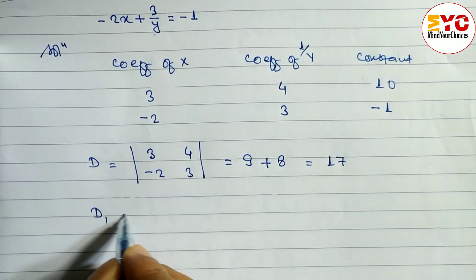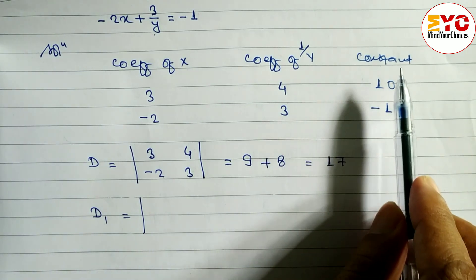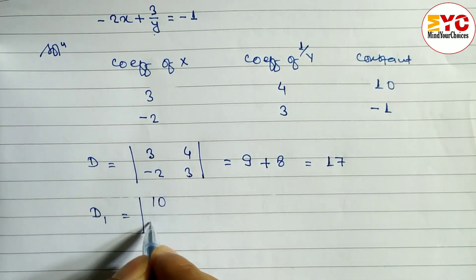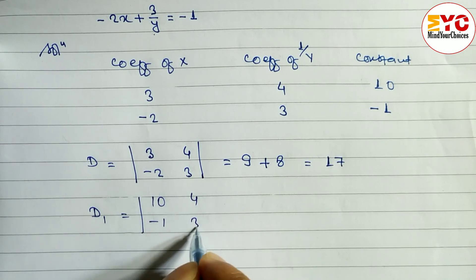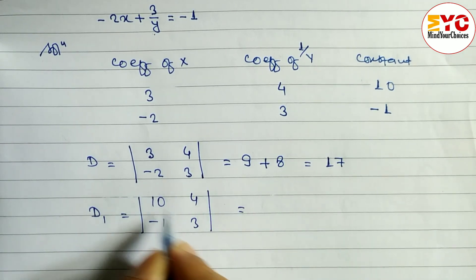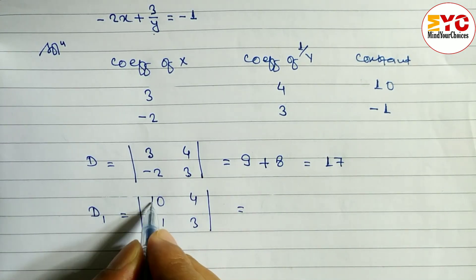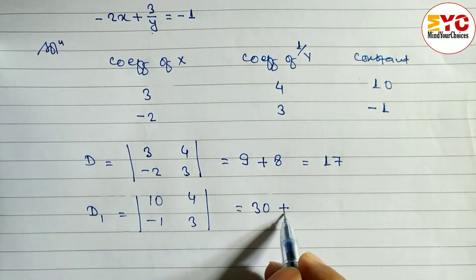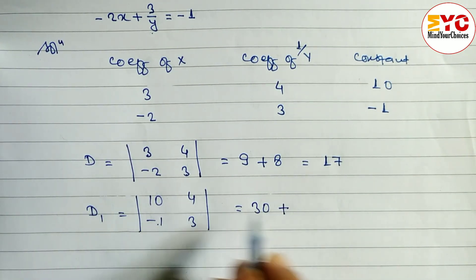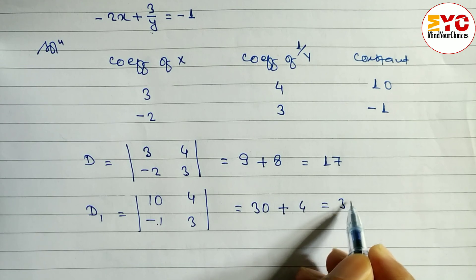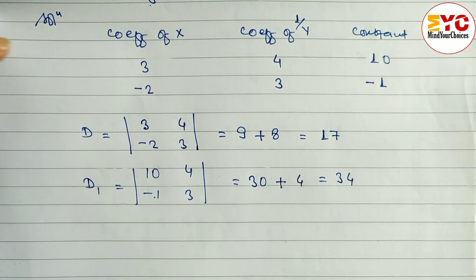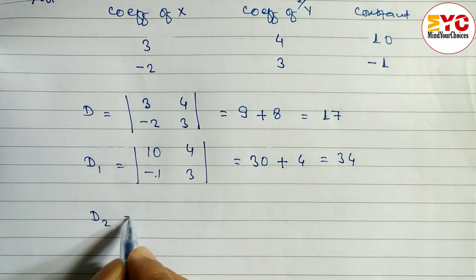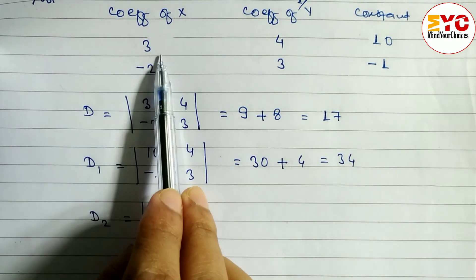Similarly, to find D1, we take the constant numbers and the coefficients of 1 by y: 10, minus 1 and 4, 3. The main diagonal is 10 into 3, which is 30. The other diagonal is minus 1 into 4, but with the minus from the formula it becomes plus 4. So 30 plus 4 gives us D1 equals 34.